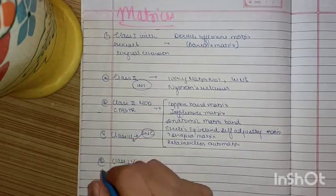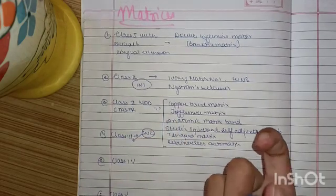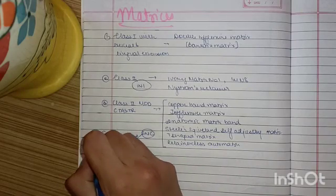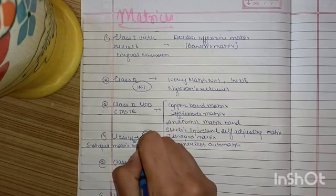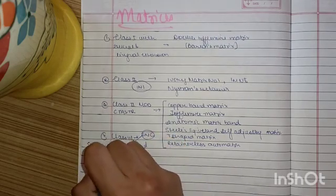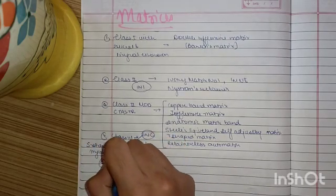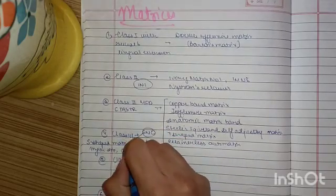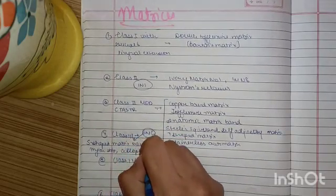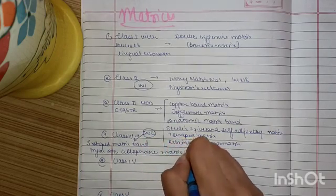By S, we have the S-shaped matrix band. By M, we have mylar strip. And by C, we have cellophane matrix band.